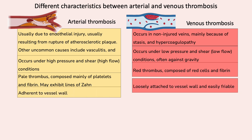As arterial thrombi are formed mainly of platelets and fibrin, they remain strongly adherent to the arterial wall. In contrast, venous thrombi are soft, loosely attached to the venous wall, and are easily friable as they are composed mainly of red cells.